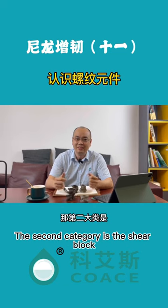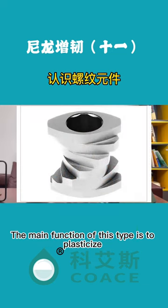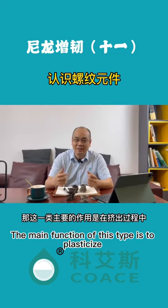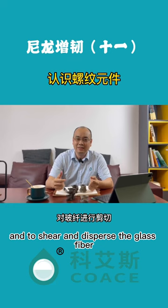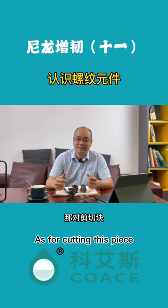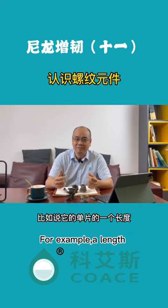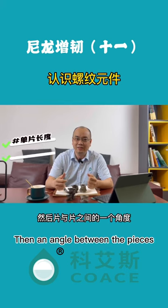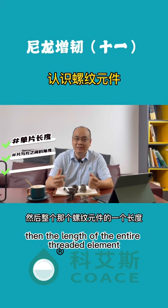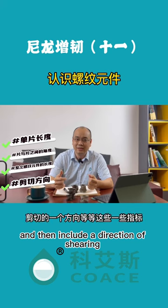The second category is the shear block, also called the shear screw element. The main function of this type is to plasticize and disperse the material during the extrusion process, and to shear and disperse the glass fiber. For the shear block, we focus on several important features: the length or thickness of a single piece, the angle between the pieces, the length of the entire threaded element, and the direction of shearing.